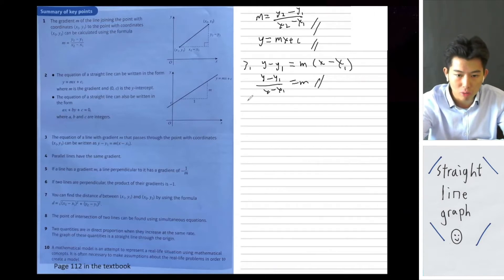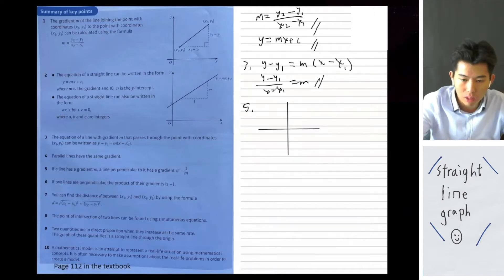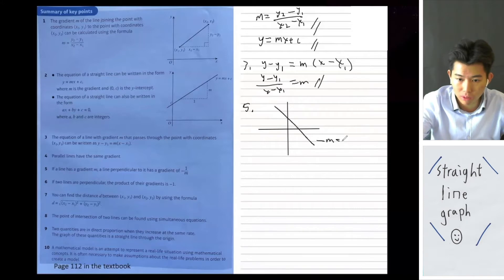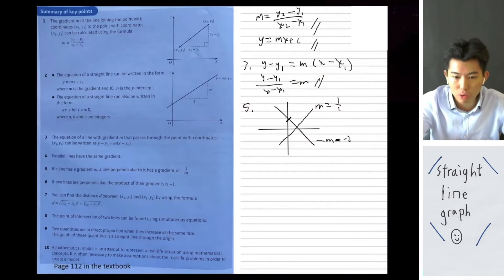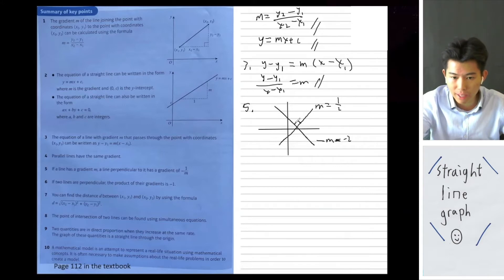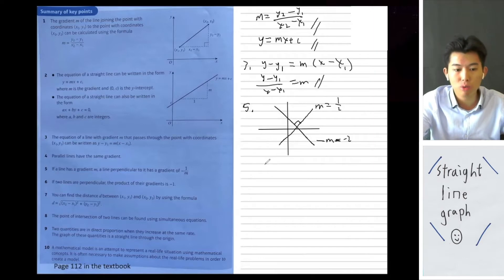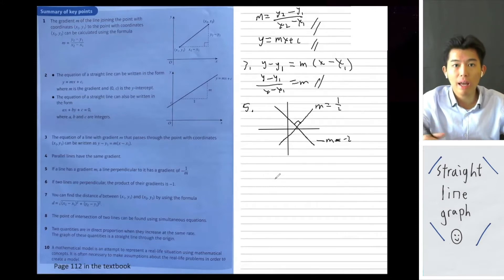For example, if a graph has a gradient of negative 2, then the line perpendicular to it would have m equals 1 over 2, and the two lines meet at 90 degrees. An easy way to remember it: for the perpendicular gradient, swap the numerator and denominator and then multiply the whole thing by negative 1.